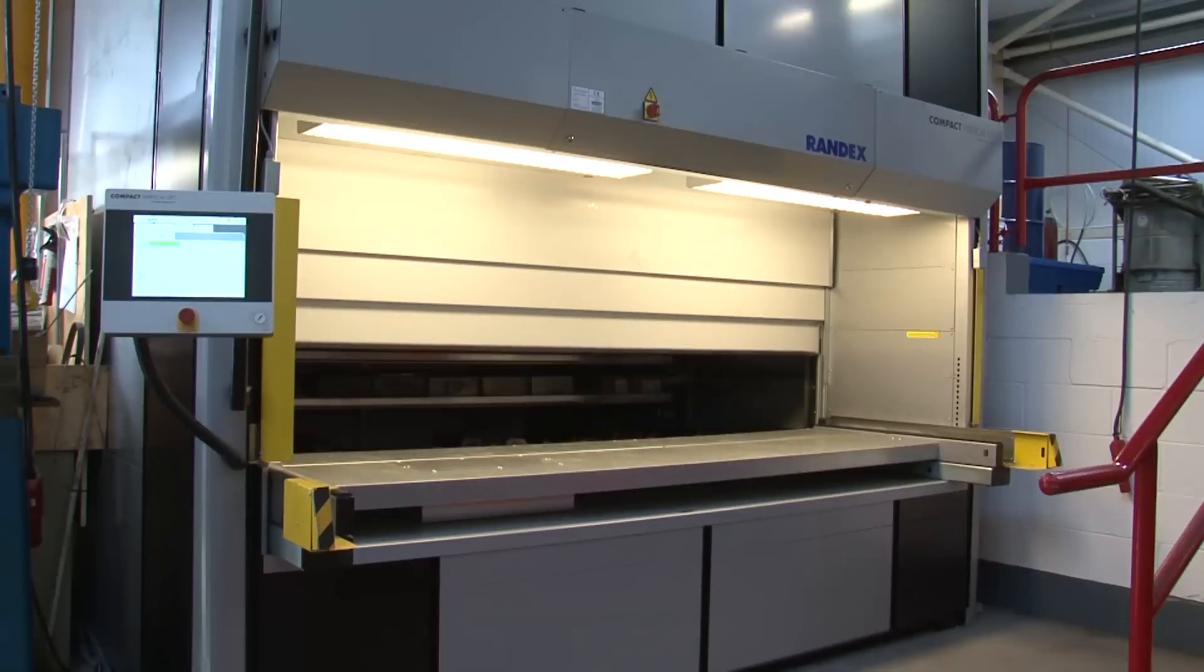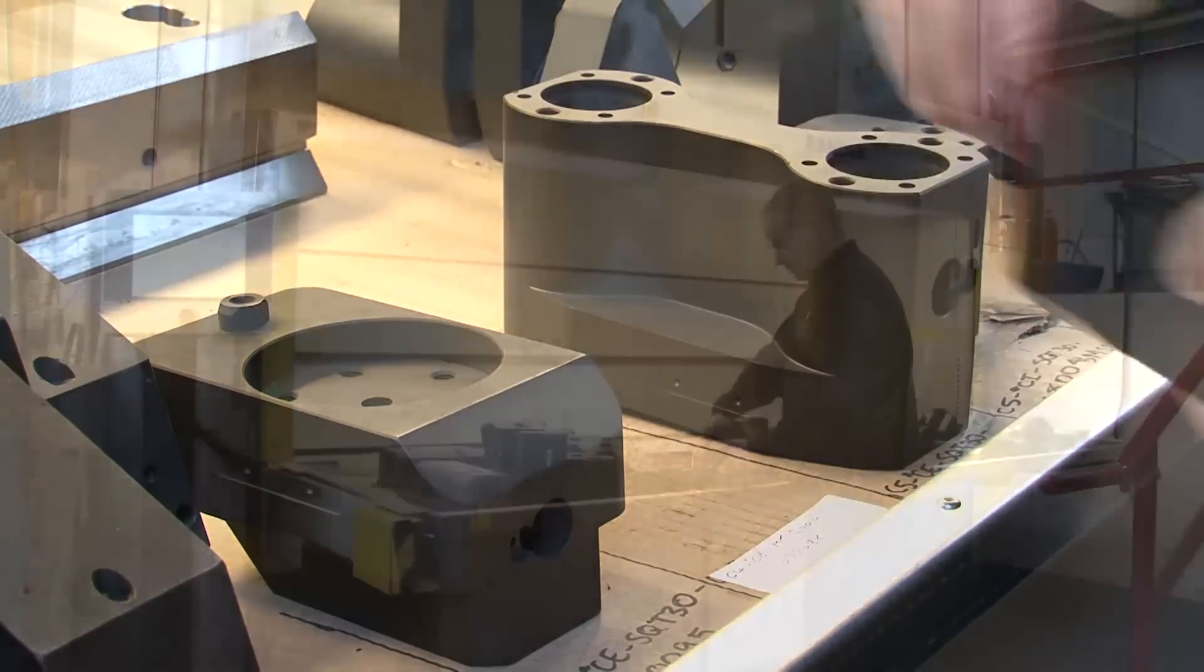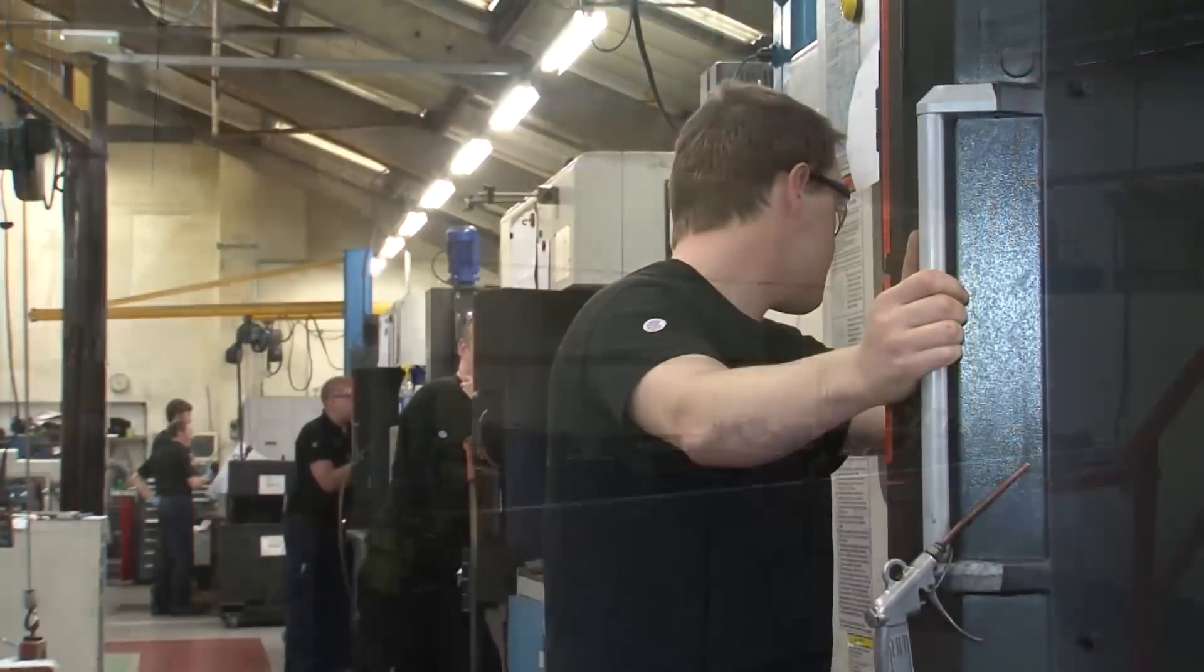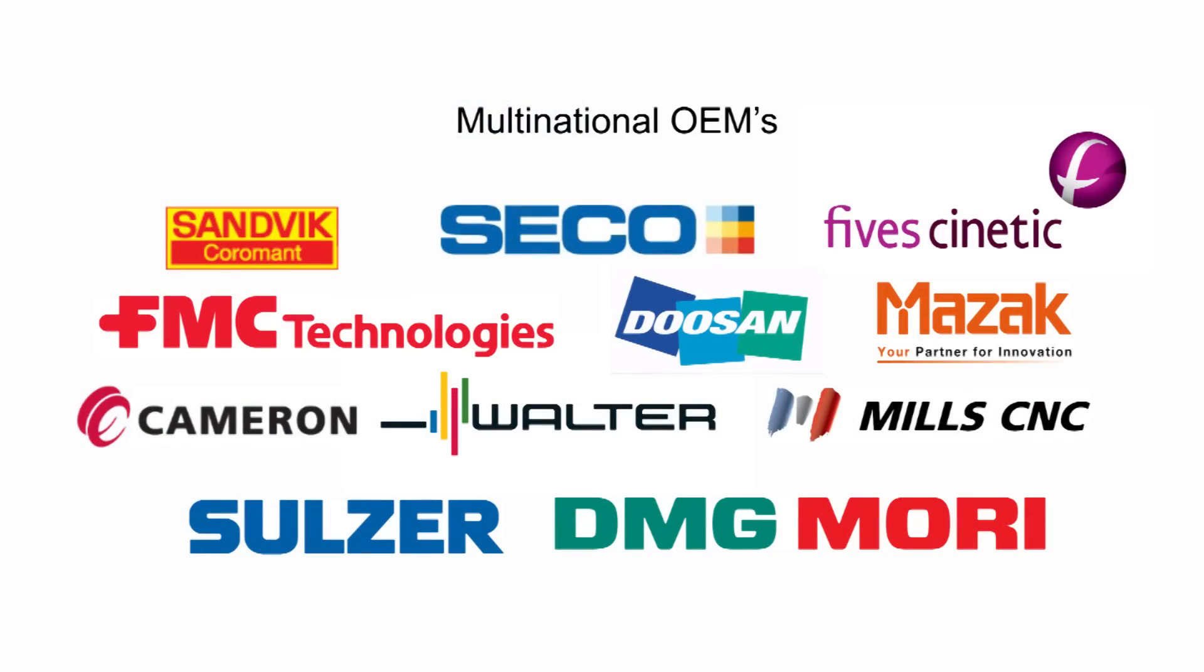The shop floor is divided into different manufacturing cells, each serving its own product lines and customers, in the three main areas of tool holding, work holding and subcontract machining for a range of multinational OEMs.